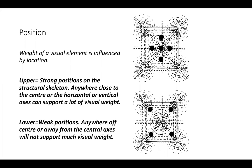Thinking about how things are positioned with regard to the structural skeleton — returning to the diagram with the square and the hidden structure — the position of an object on the surface within the rectangle of the canvas has a very large bearing on how heavy it will appear. Strong positions on the structural skeleton are anywhere close to the centre or the horizontal/vertical axis, which can support a lot of weight. Weak positions are anywhere off-centre or away from the central axis, which will not support much weight — and those weak positions actually sit on the diagonal axis, which is why we treat them as less significant.